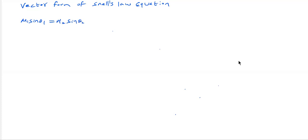This vector form will be more applicable when a plane diagram comes. If some three-dimensional case arises — if the boundary is located in space — then how do we find out the direction of the refracted ray? For that purpose, we will take this vector form.